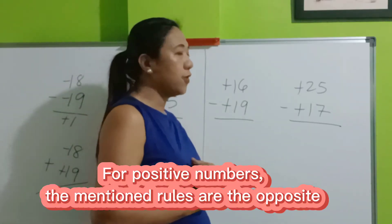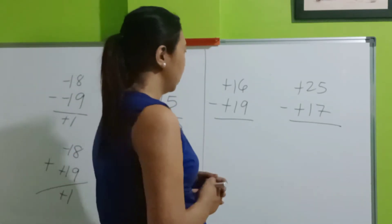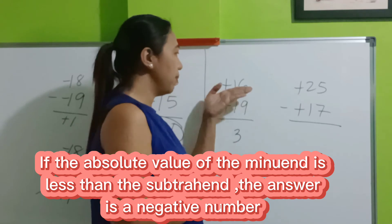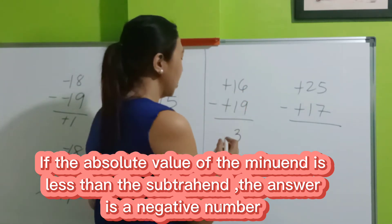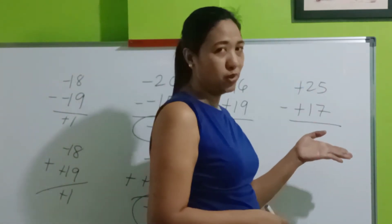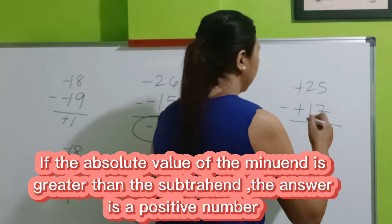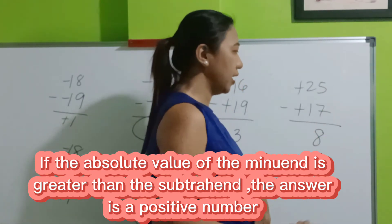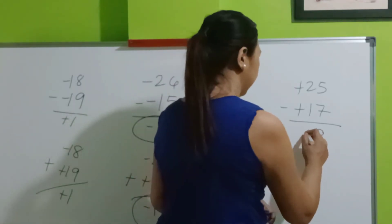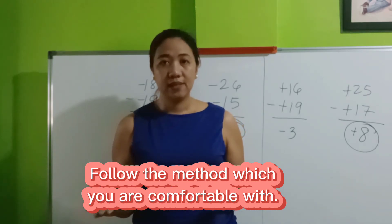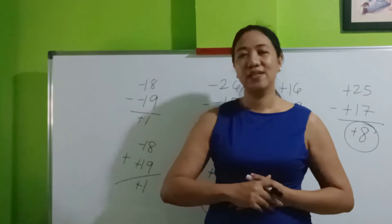How about if they are both positive numbers? Just subtract. If the absolute value of the minuend is less than the absolute value of the subtrahend, the sign should be negative. Take note of that. Again, let's subtract. If the absolute value of the minuend is greater than its subtrahend, then the sign should be positive. But if you think you're more comfortable with the long cut, then do the long cut. If you're more comfortable with the shortcut, then do the shortcut.